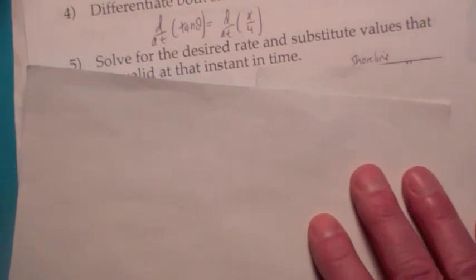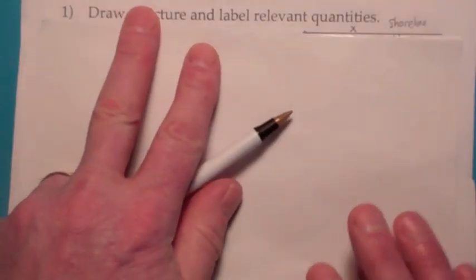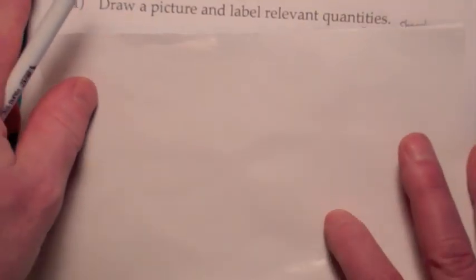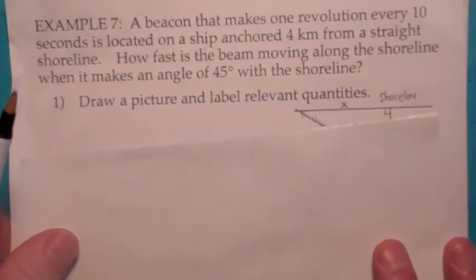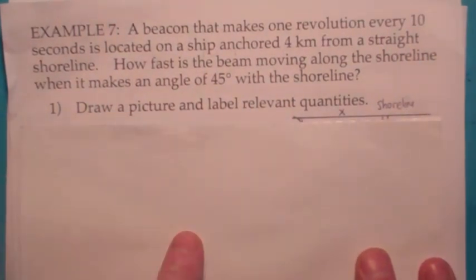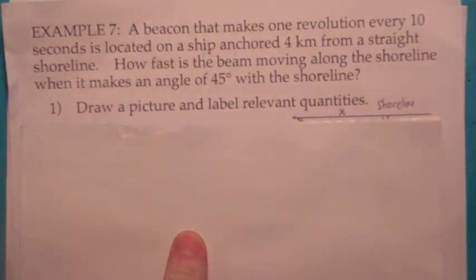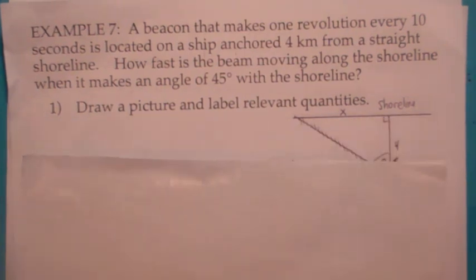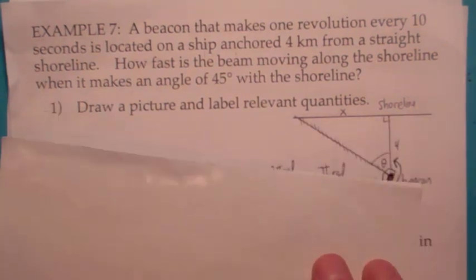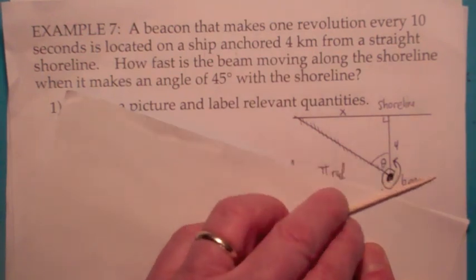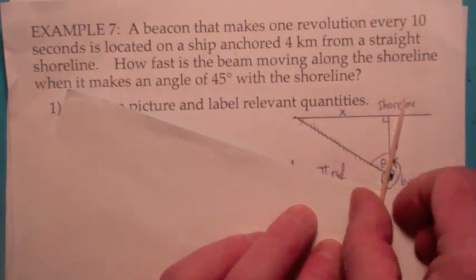So again, that was an example of a geometric formula type. I think we've got time for one more here. In this one, you have a beacon that makes one revolution every 10 seconds and is located on a ship anchored 4 kilometers from a straight shoreline. The question is, how fast is the beam moving along the shoreline when it makes an angle of 45 degrees with the shoreline?